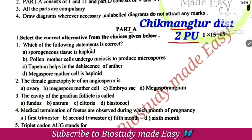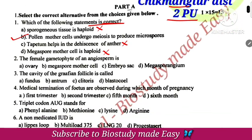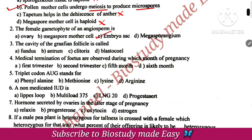Which of the following statement is correct? Sporogenous tissue haploid — no. Capitum dehiscence of anthers helpful — no. Megaspore mother cell haploid — the right answer is option B, pollen mother cell. The correct answer: female gametophyte of angiosperm is embryo sac.